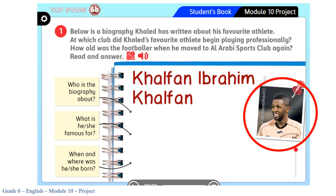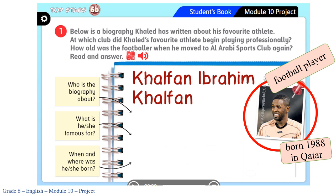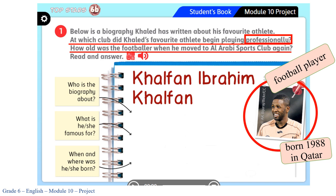Who is this in the picture? Do you know him? He is Khalfan Ibrahim. What do you know about him? He is a footballer. He was born in 1988 in Qatar. Let's check the question: at which club did Khalid's favorite athlete begin playing professionally? So, who is Khalid's favorite athlete? He is Khalfan Ibrahim. The second question follows.